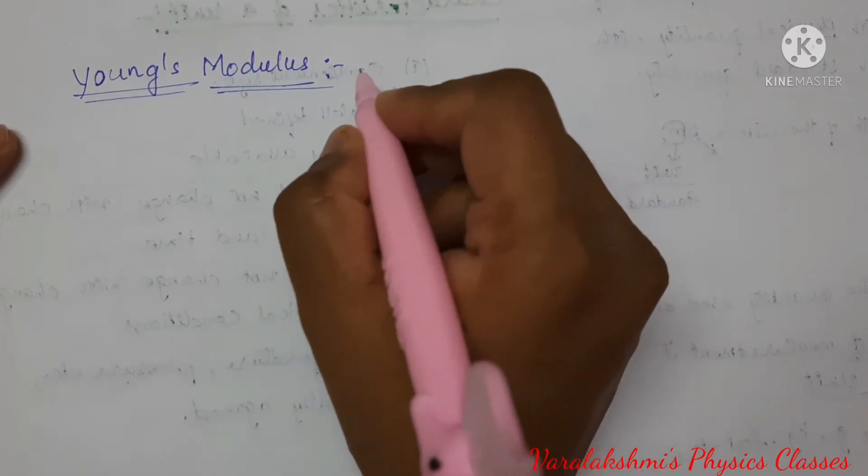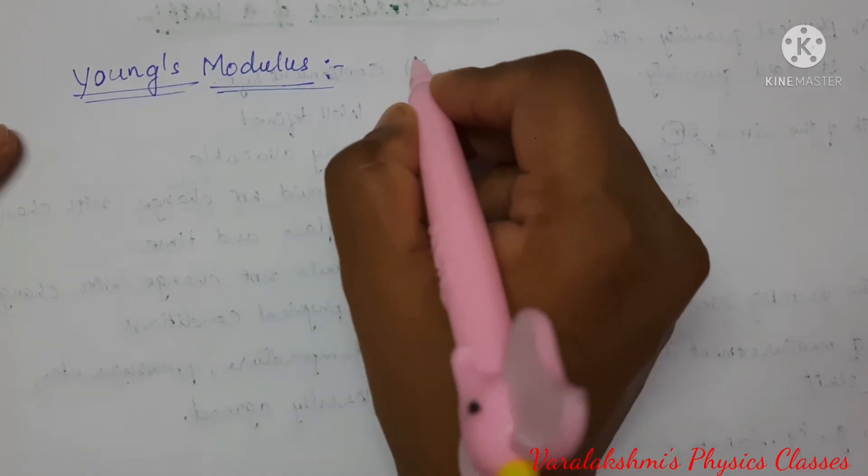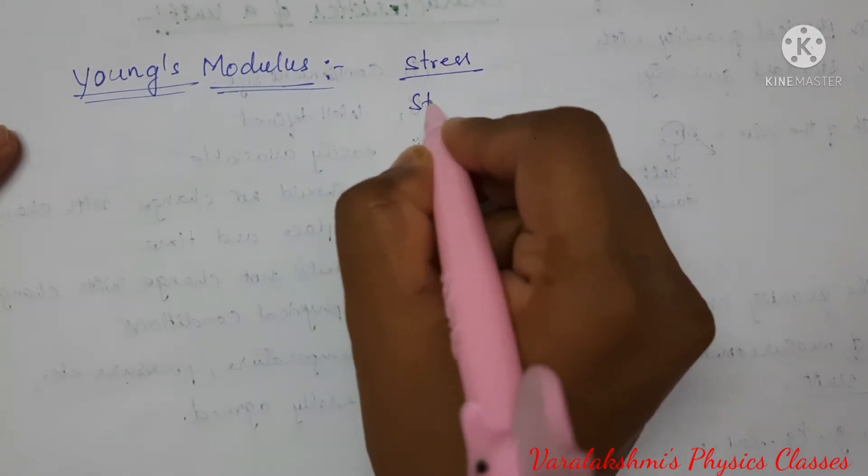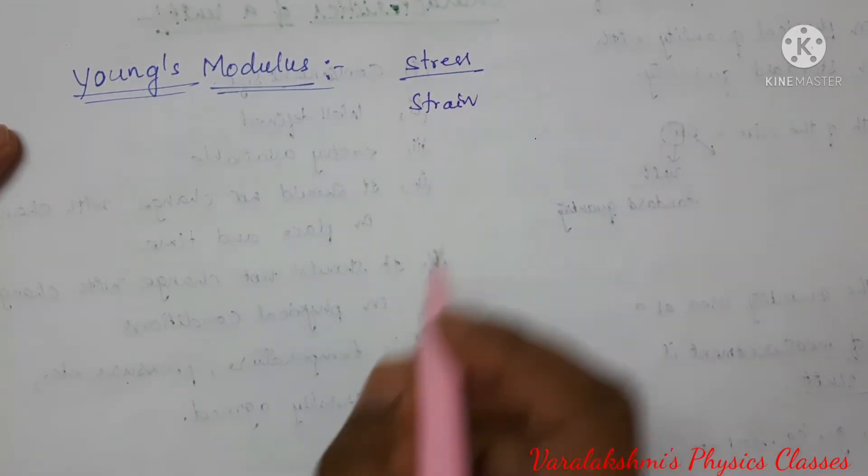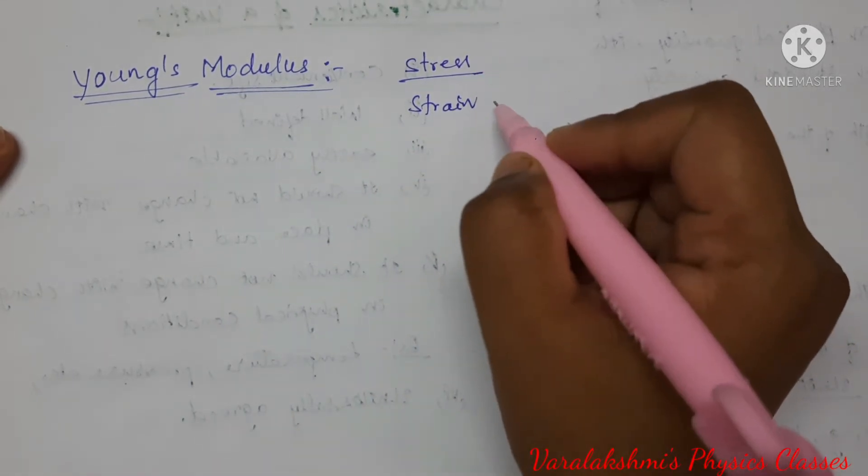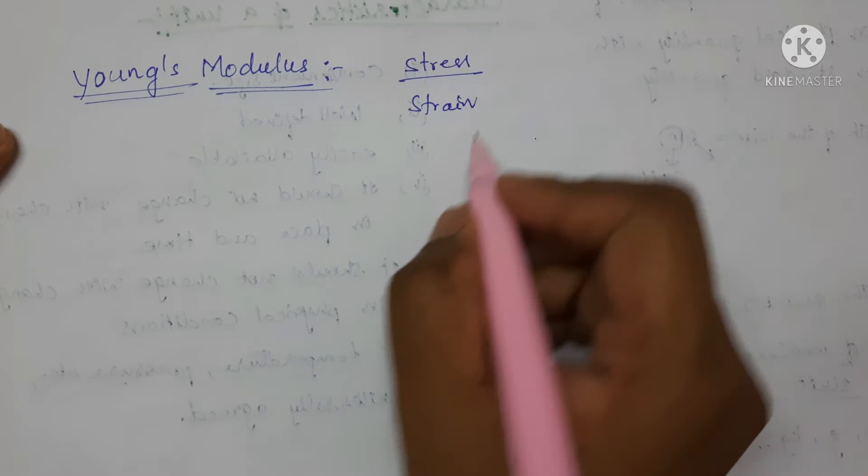The formula for Young's modulus is stress upon strain. Let us see the dimensions of the stress and strain separately, then we will substitute here.